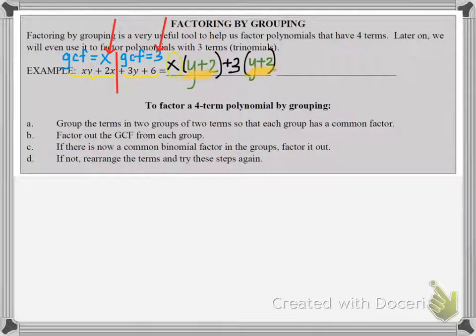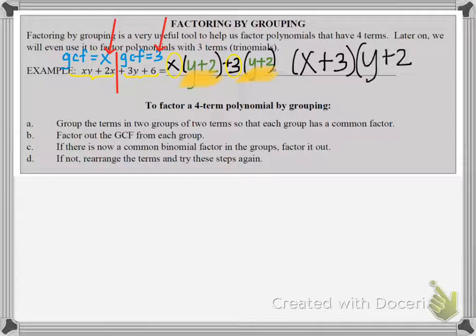Okay, so now we're ready to write our final answer. So we take the two GCFs, the x plus 3, and that forms one binomial. And then we take the matching binomials, the y plus 2, and that forms our second binomial, and that's our final answer.